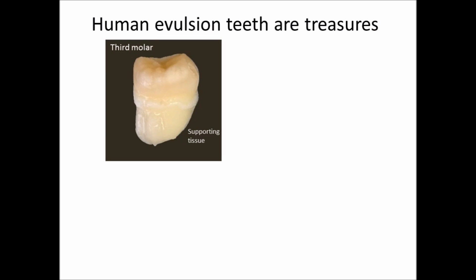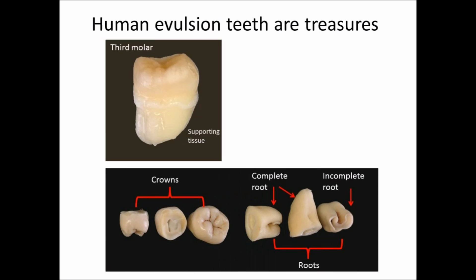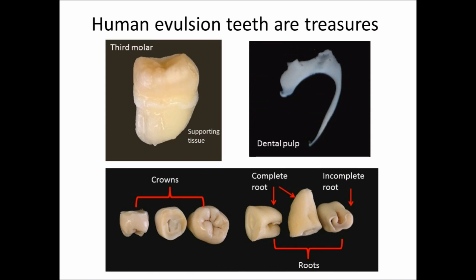Here is the human third molar wisdom tooth. When you cut the tooth like this, you can get dental pulp like this. From the dental pulp, we can easily obtain oral mesenchymal stem cells. The tissue attached to the surface of the tooth also provides oral stem cells.